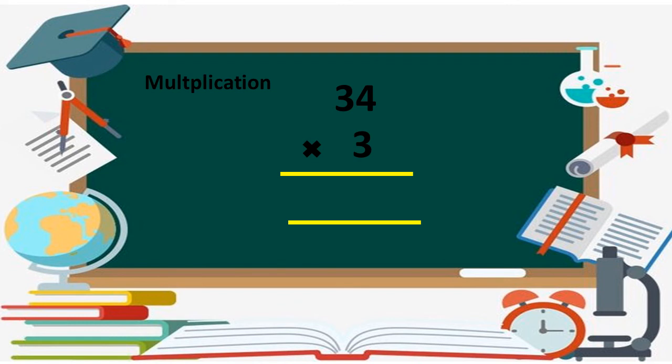Now let me show multiplication with whole numbers. Here I have 34 multiplied by 3. We read the table of 3 times 4 first, then 3 times 3. Three 4s are 12 and three 3s are 9, and we add the tens digit of 12 into 9. So the product of 34 and 3 is 102.